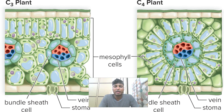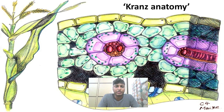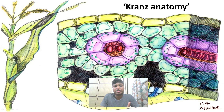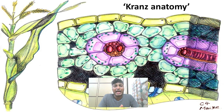You will understand why such a difference exists in C4 leaf anatomy when we study the C4 pathway. This particular arrangement of mesophyll cells in C4 plants is known as Kranz anatomy. Inside the leaf of a C4 plant, the outer mesophyll cells are arranged in a circular manner, inside which there are again inner spongy cells arranged in a circle, and inside that are the conducting tissues — xylem and phloem. This arrangement, like a necklace or a wreath, is called Kranz anatomy — 'Kranz' meaning wreath.